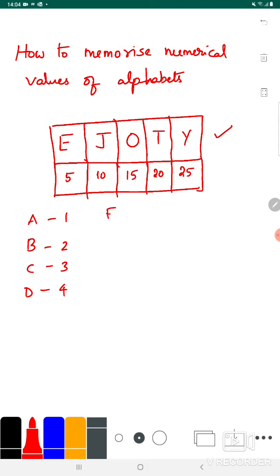Coming to F, if you invert F, it looks like a 6, so F is 6. For G, observe here, there is a 7 in it. Then H, if you join both the ends, you get 8. I, written in cursive, represents a 9.